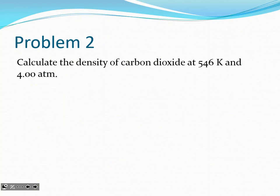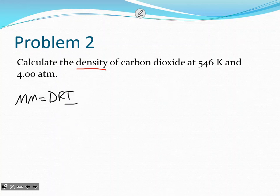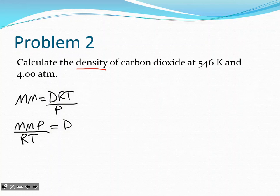Next problem: calculate the density of carbon dioxide at 546 K and 4 atm. We write the density equation: density = molar mass × P / (RT). Since we have atm, we use R = 0.0821 (L·atm)/(mol·K). We also need to find the molar mass of CO₂ from its formula.